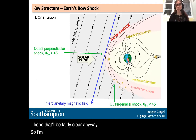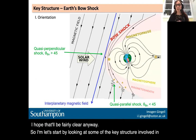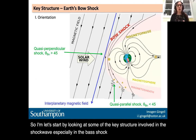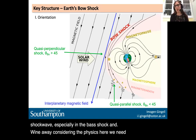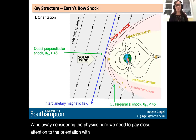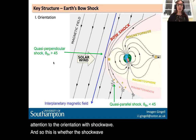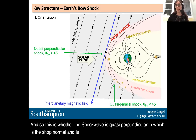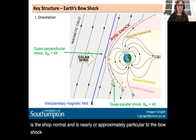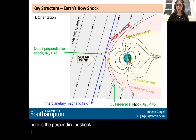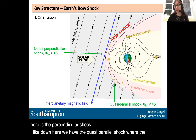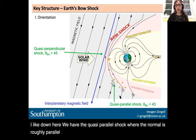Let's start by looking at some of the key structure in the shock wave, especially in the bow shock. When considering the physics here, we need to pay close attention to the orientation of the shock wave — whether the shock is quasi-perpendicular, in which case the shock normal is nearly perpendicular to the IMF, or quasi-parallel, where the normal is roughly parallel to the IMF. These two regions are rather different.